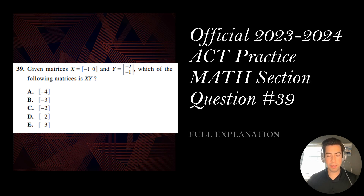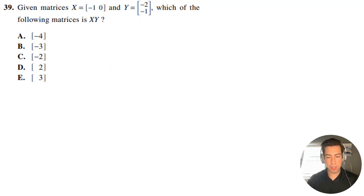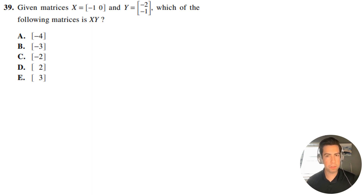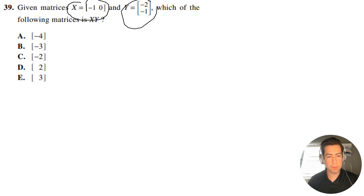All right, guys, question number 39. Let's get right into it. So here we have a matrix problem. Don't worry if you don't know this formula — sometimes I like to throw in a little bit of math trivia, but let's just go ahead and walk through it. So given matrices X equals this and Y equals this, which of the following matrices is the equivalent of X times Y?